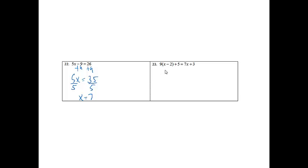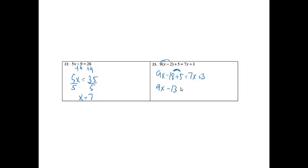The next one, we still are going to solve for x, but I want to get rid of some things first. I'm going to get rid of the parentheses by distributing, so I'll get 9x minus 18 plus 5 is equal to 7x plus 3. And then I'm going to combine my terms over on the left side, so I'm going to get 9x minus 13 equals 7x plus 3.